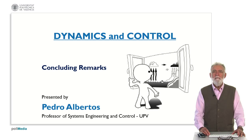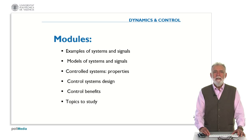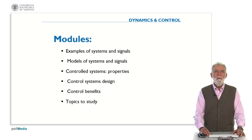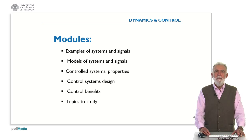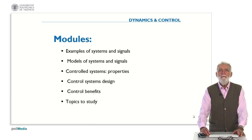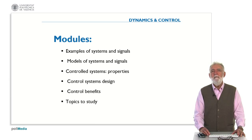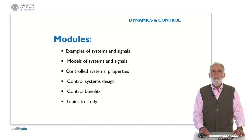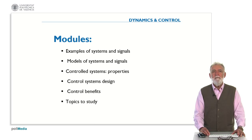Today, we are going to bring some concluding remarks. You remember that the course had six modules dealing with the examples of systems and signals, models of systems and signals, and the properties of control systems. Then, after that, we have been dealing with control system design approaches, and we showed the benefits of the control. Finally, we analyzed some topics to be studied more in depth.